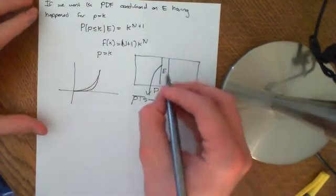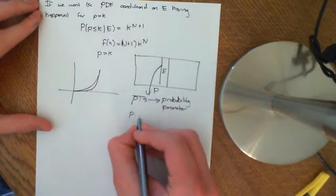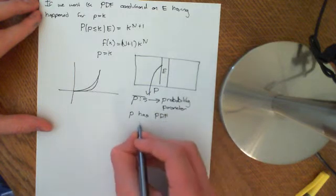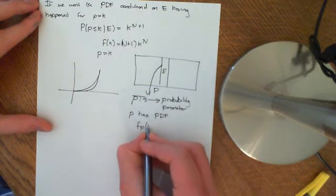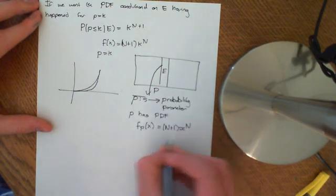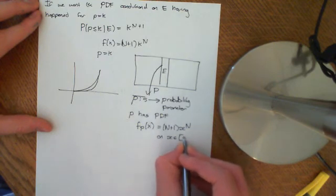And basically, if I do that, this P has PDF as PDF. So F of P of little X is equal to N plus 1 times X to the N on X is an element of 0 to 1.